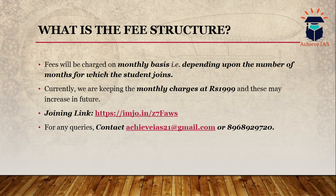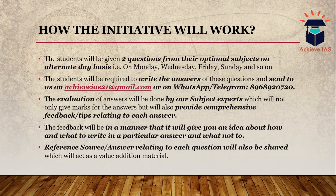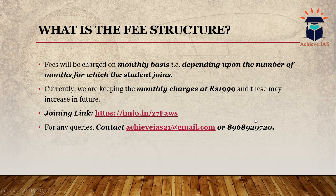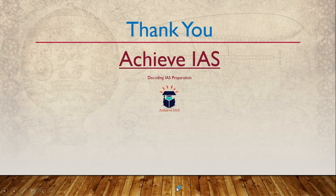If you have any queries or doubts relating to the initiative, you can contact us at AchieveIAS21@gmail.com or at our number 8968920720. Please note there was a mistake shown on screen — the correct number ends in 20720, not 29720. You can see on screen the correct number is 20720.